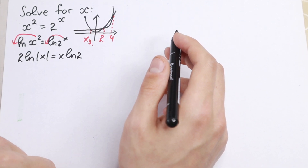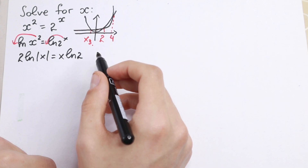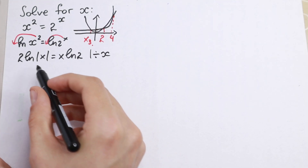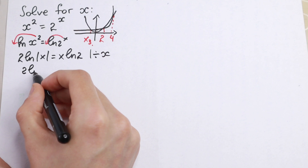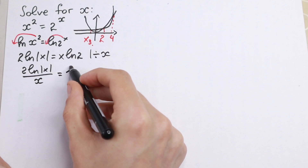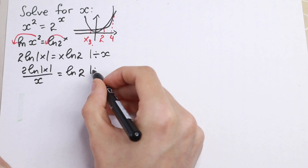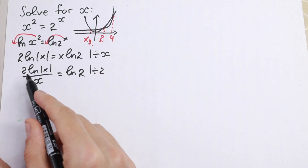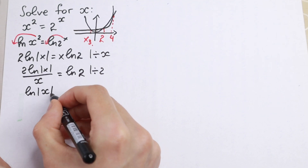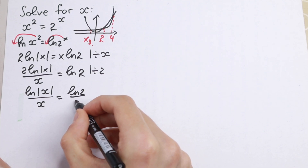What are we going to do next? Sometimes x can be negative, but let's simplify. Let's divide both sides by x, then divide by 2. As a result we have: ln|x| / x = (ln2) / 2.